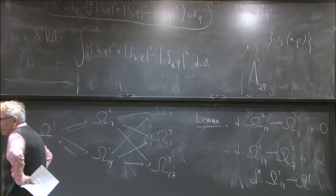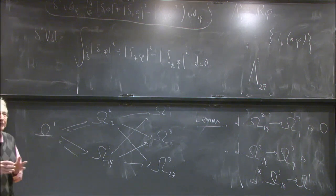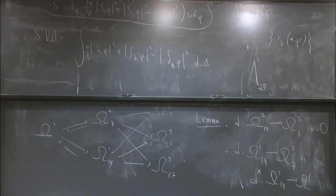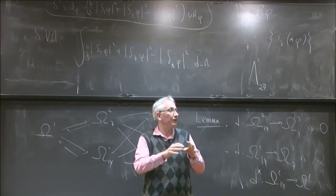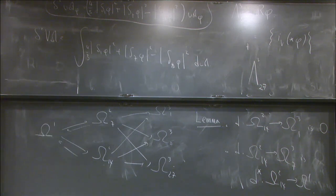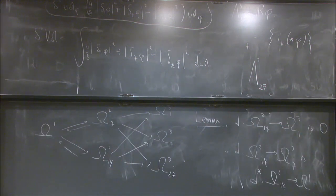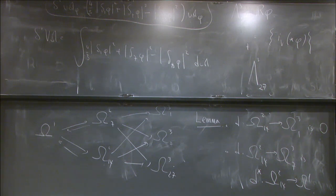We could take the corresponding discussion for Calabi-Yau manifolds, and there of course we do know a lot because we have Yau's theorem, which says that if we're given a manifold with a trivial canonical bundle and a Kähler class, then there's a unique Calabi-Yau metric in that cohomology class. In a sense that reduces the question to algebraic geometry. Here we don't have algebraic geometry, and there are not many general tools, and that's the interest of the subject.